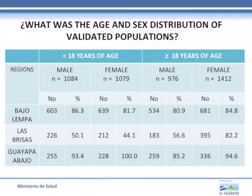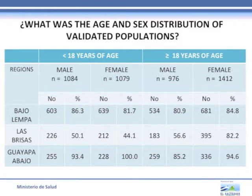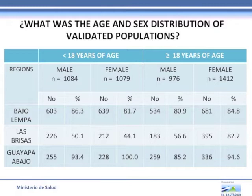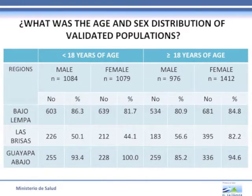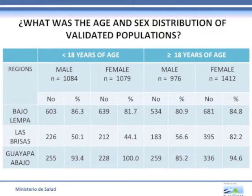Regarding age and sex distribution of the validated population: of those under 18 years, 184 were males and 1,079 were female. Above 18 years of age, 976 were males and 1,412 were female.